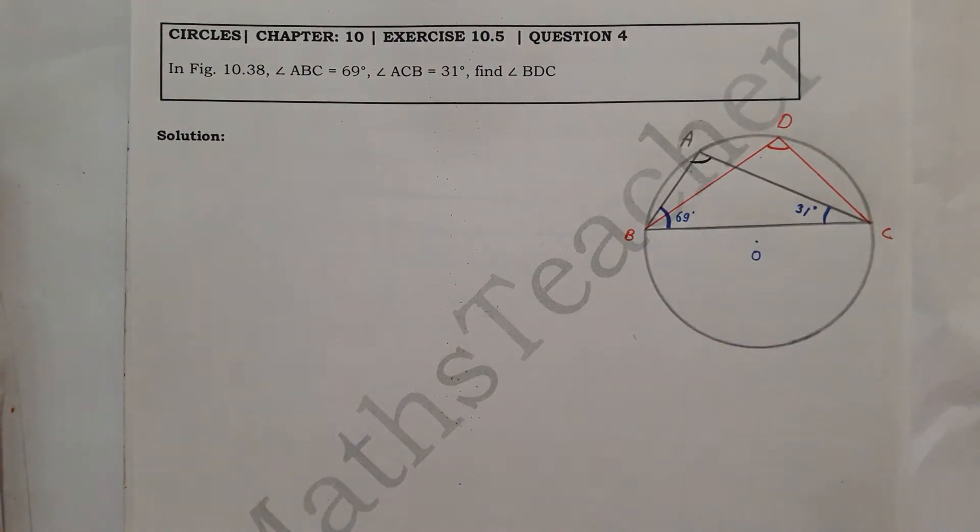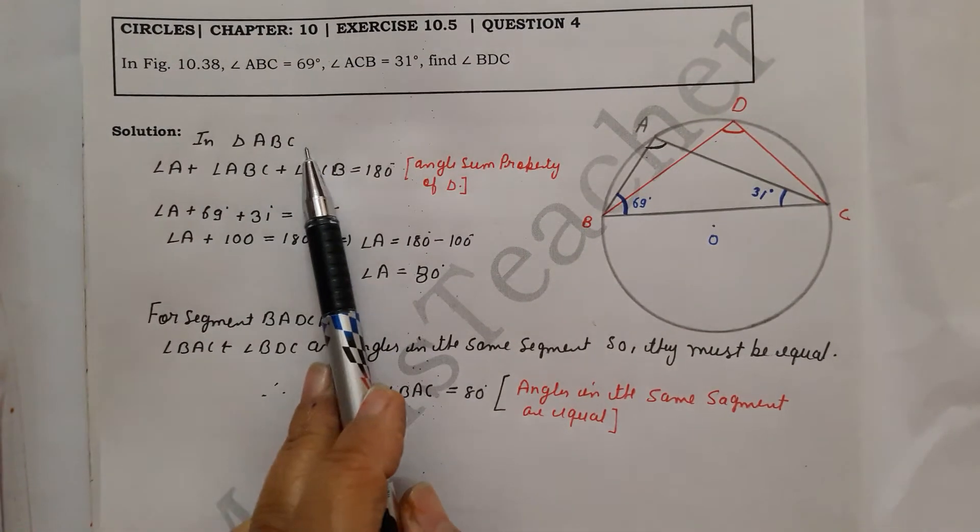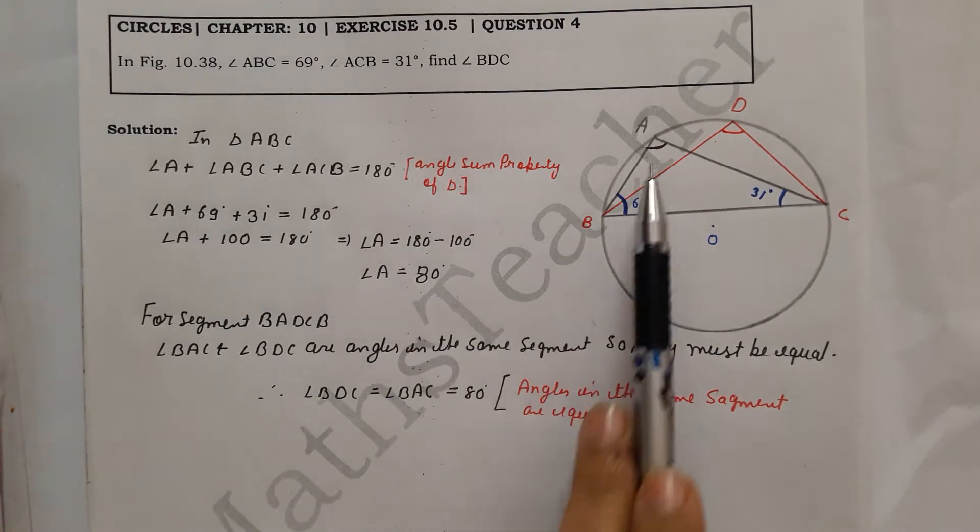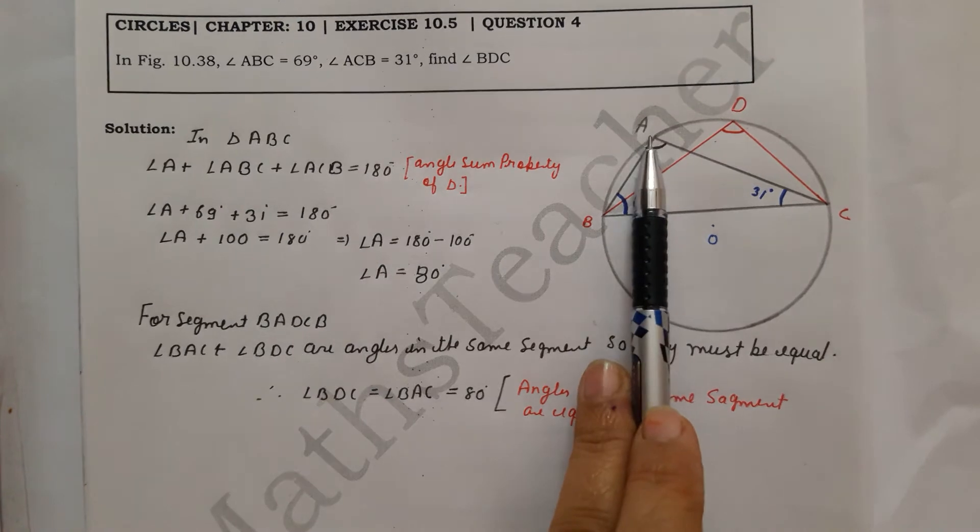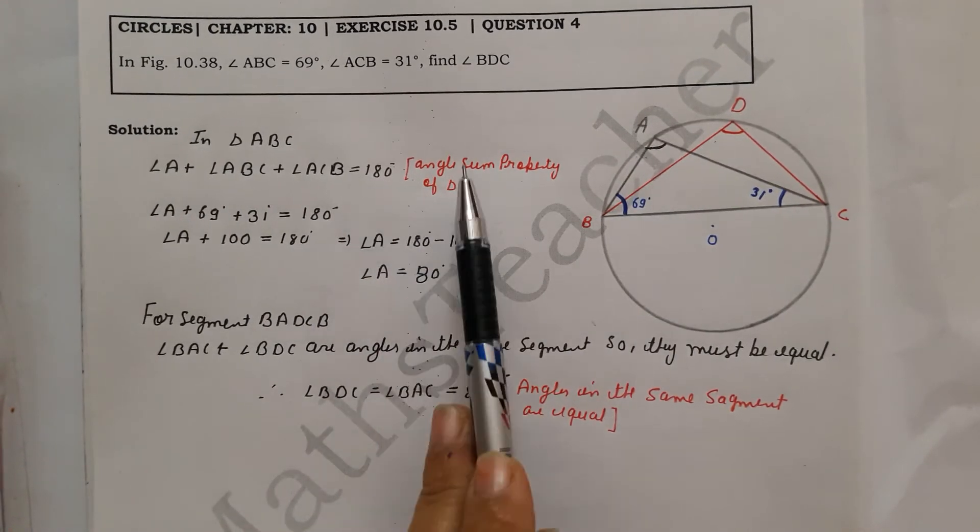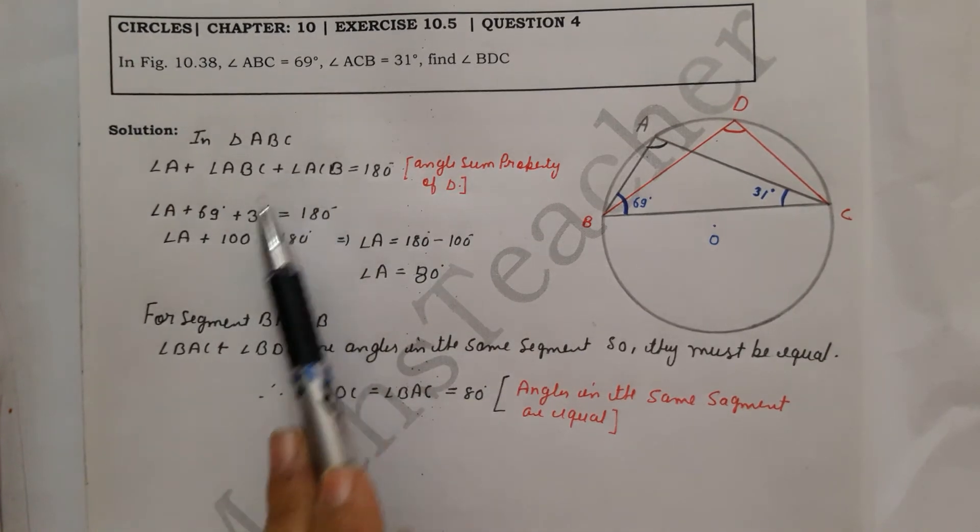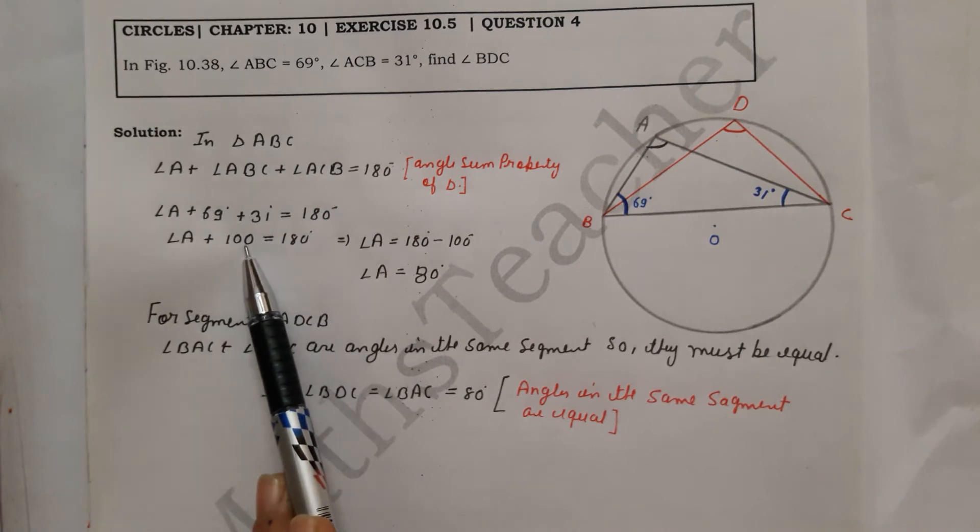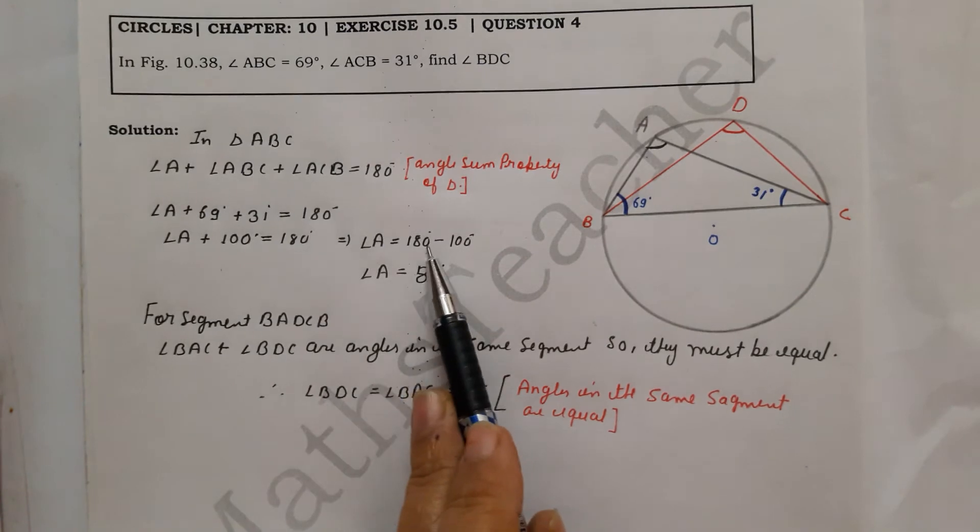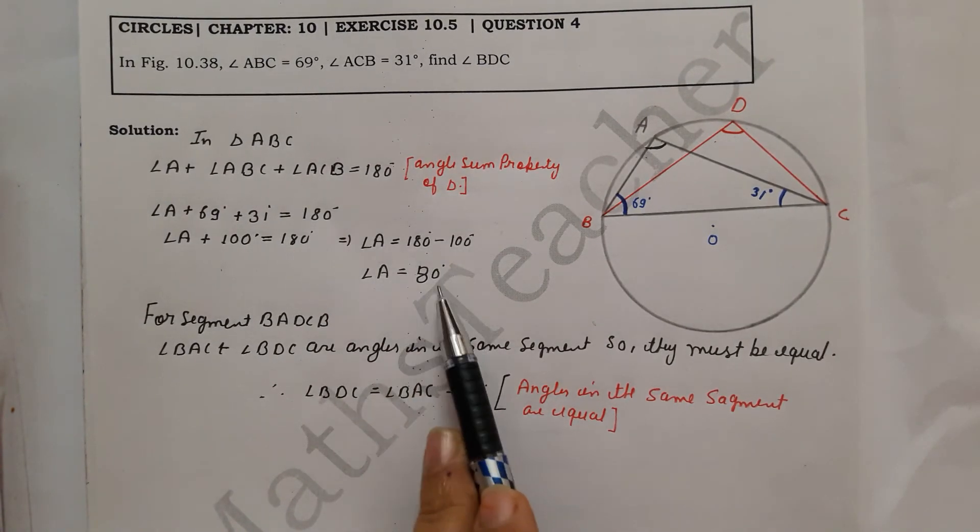So you write the solution: In triangle ABC, we are using angle sum property. Angle A + angle ABC + angle ACB = 180 degrees - angle sum property. Put the values and add them - you get 100 degrees. So angle A = 180 - 100 = 80 degrees.